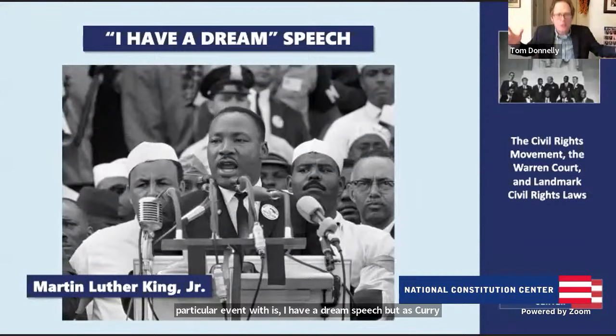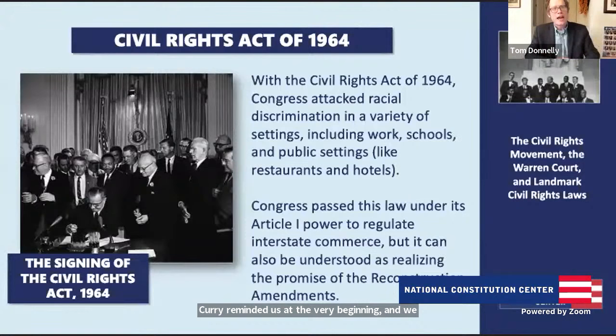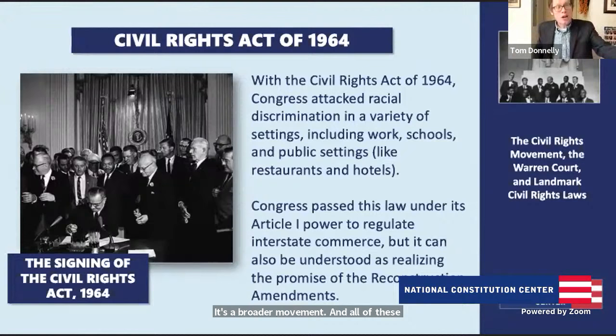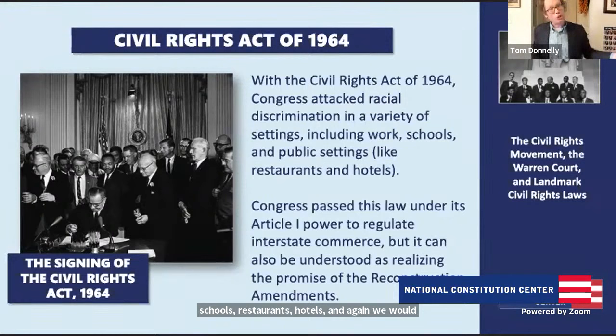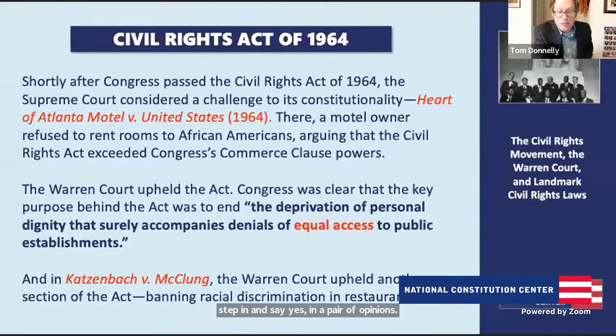Also in 1963, we get the famous March on Washington — the gathering meant to mark the 100th anniversary of the Emancipation Proclamation, attracting hundreds of thousands of people to the Lincoln Memorial. Dr. King emerges as the famous public image of this event with his 'I Have a Dream' speech. But as we've reminded you throughout this class, this isn't just a single person driving constitutional change — it's a broader movement. All of these activities culminate, following the tragic assassination of JFK, with a push in Congress for the Civil Rights Act of 1964, which attacks racial discrimination in work, schools, restaurants, and hotels. The Warren Court stepped in and said yes — in the Heart of Atlanta Motel v. United States and Katzenbach v. McClung — the Civil Rights Act of 1964 is constitutional.